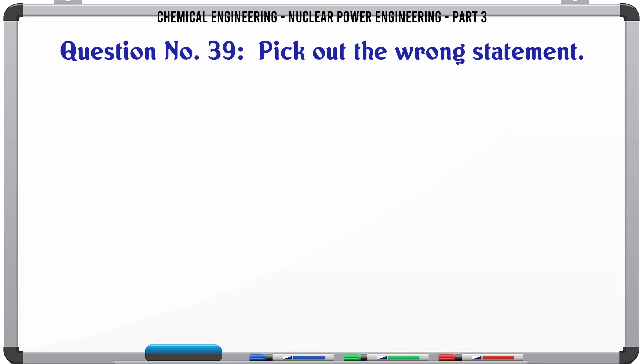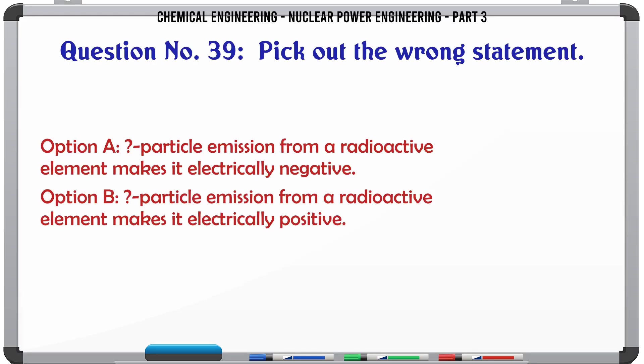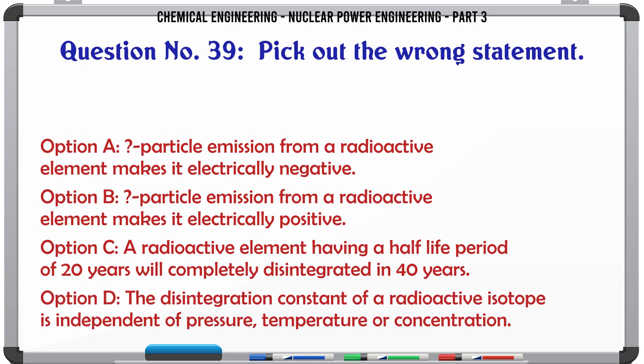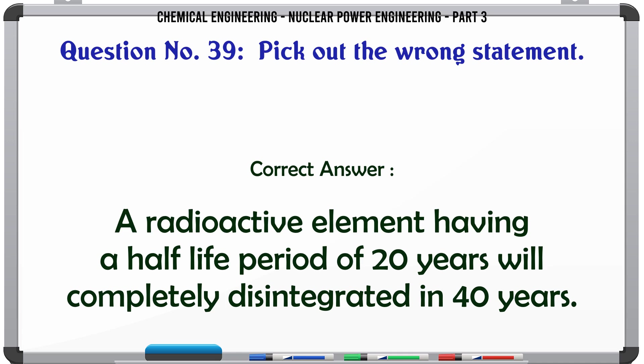Pick out the wrong statement. A radioactive element having a half-life period of 20 years will completely disintegrate in 40 years. The correct answer is a radioactive element having a half-life period of 20 years will completely disintegrate in 40 years.